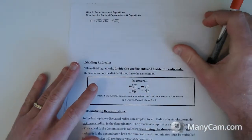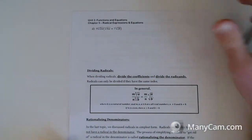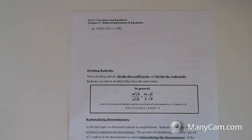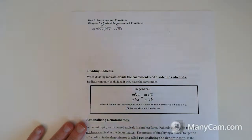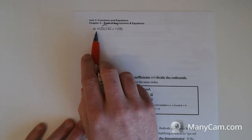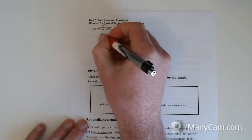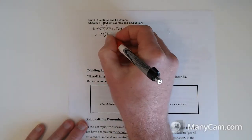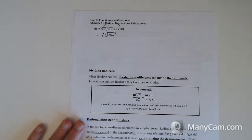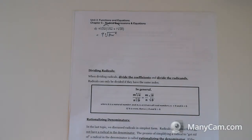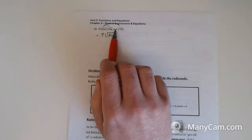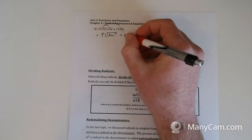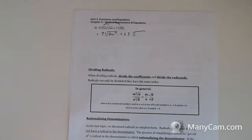One last example before we get on to division — it's a third root now. It's pretty much the same; we just have to know how to simplify third roots, which can be a bit harder. We want to rainbow again. First, let's expand: coefficients 9 times 1 is 9, third root of 2w times 4w is 8w squared. Do not forget the squared — 2w times 4w gives 8w squared.